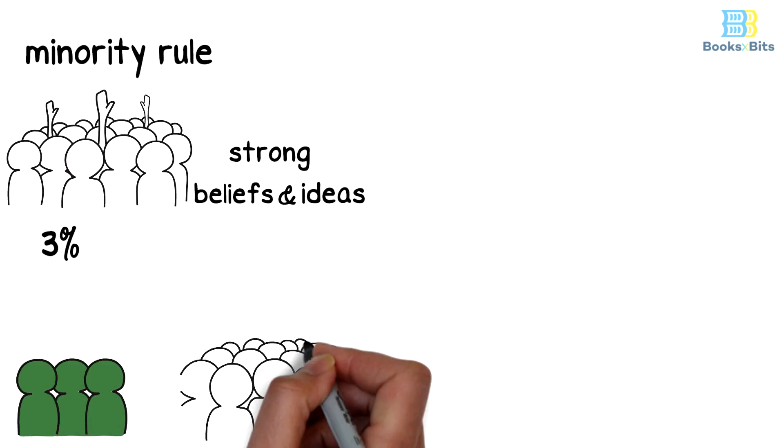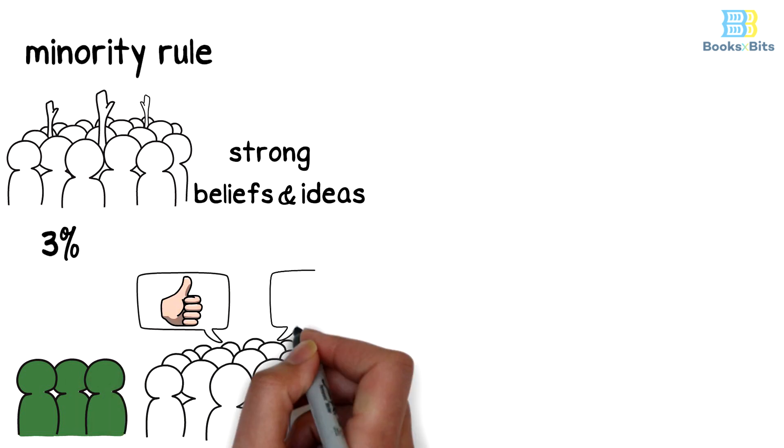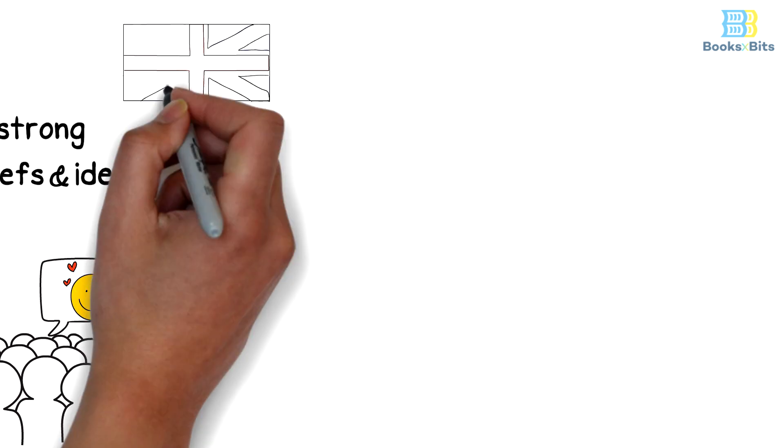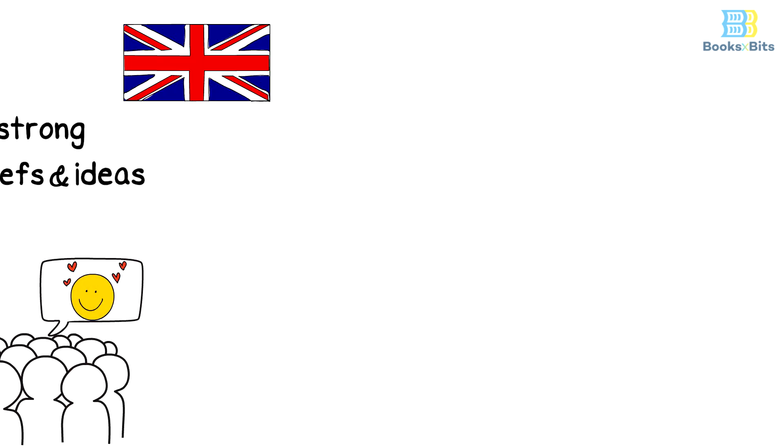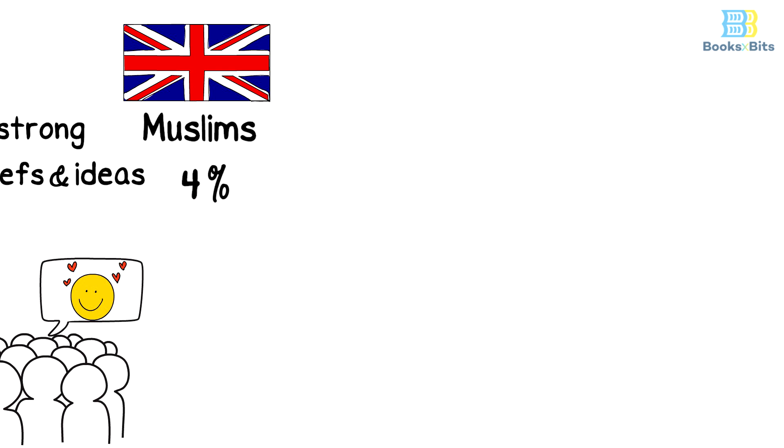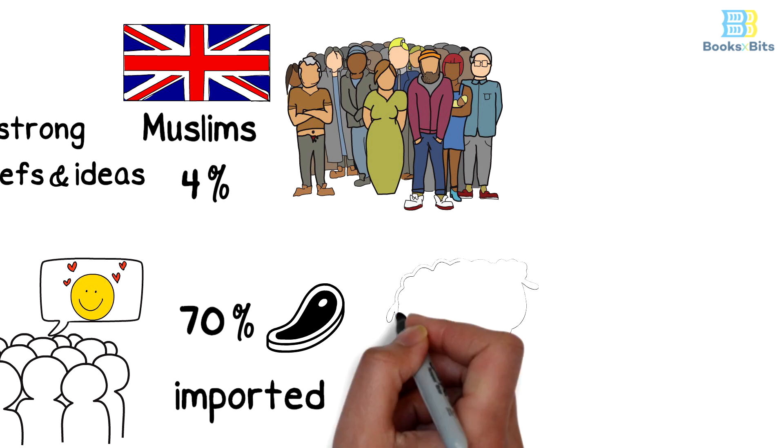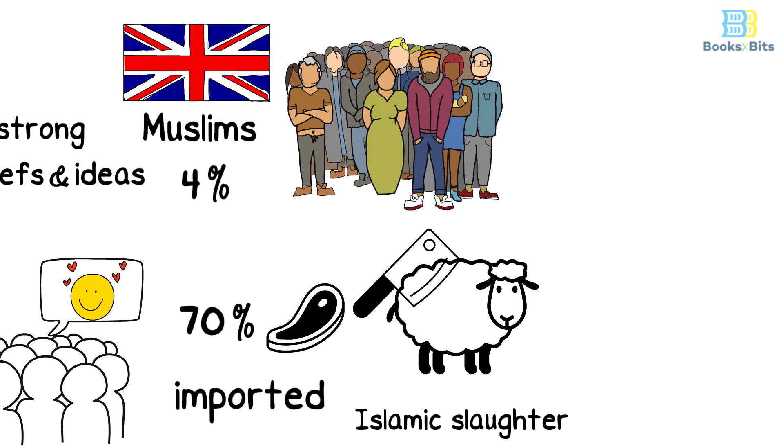The minority forces all members of society to pursue their preferences in various aspects of daily life. The United Kingdom is a clear example of this. Muslims in the United Kingdom only make up about 4% of the total population, but 70% of the meat imported into the UK adheres to Islamic slaughter guidelines.